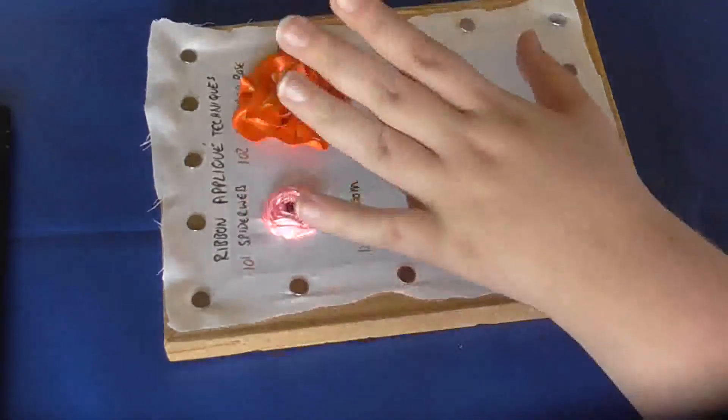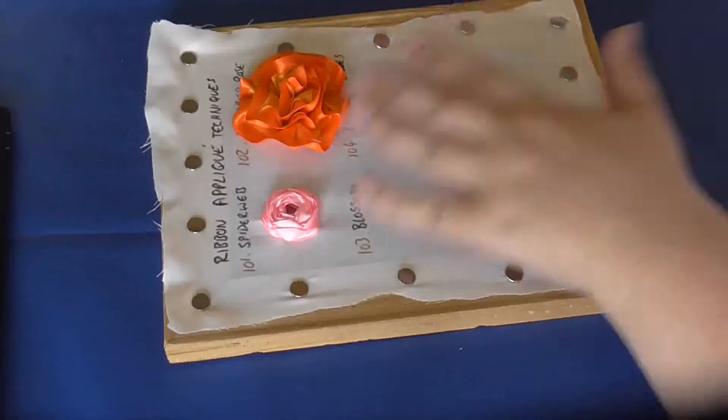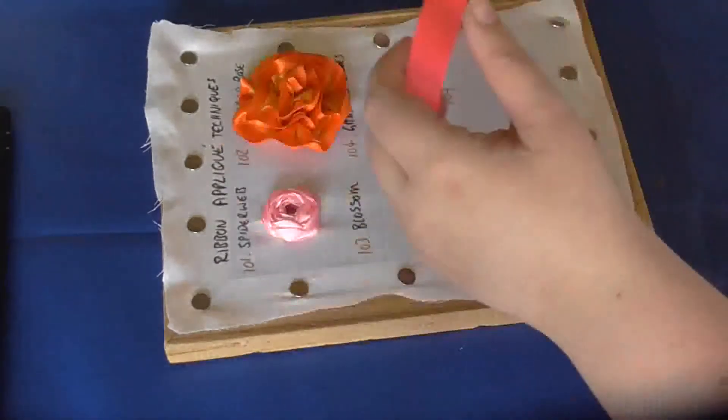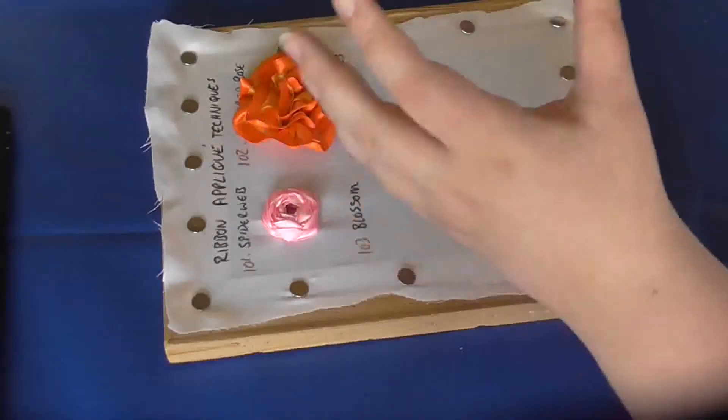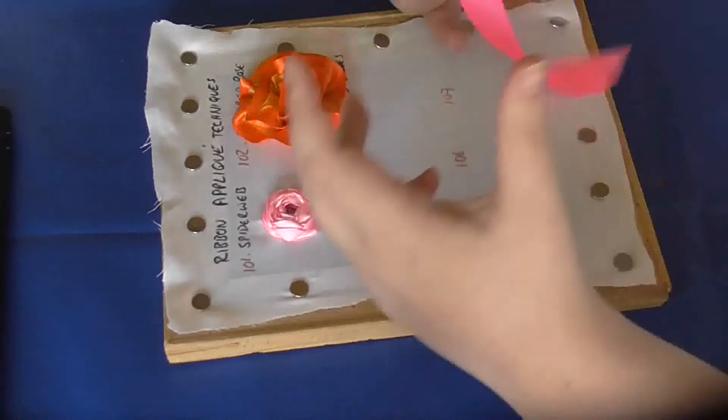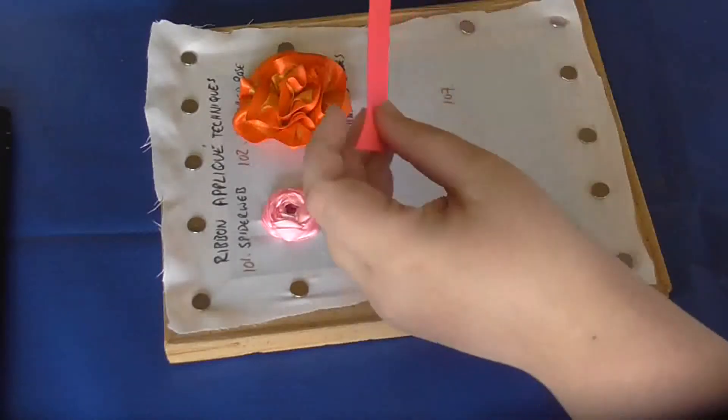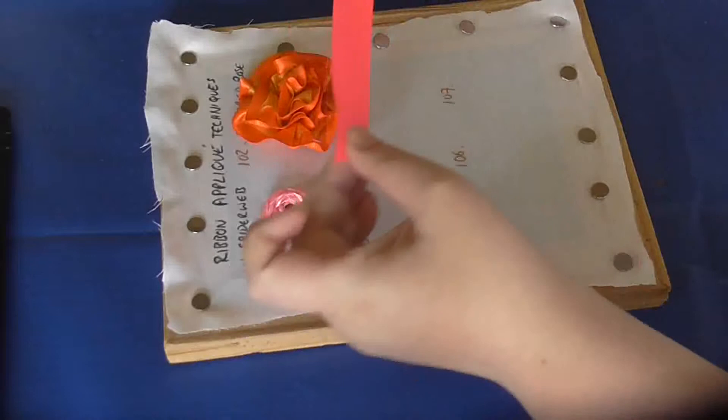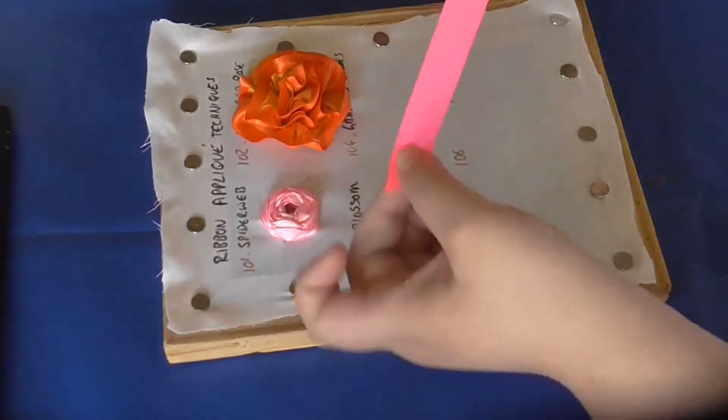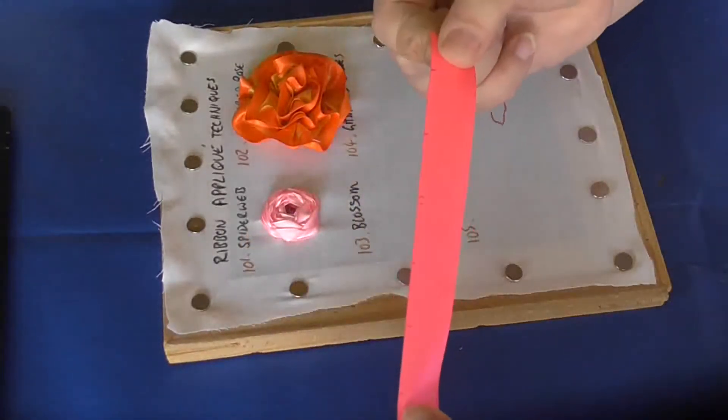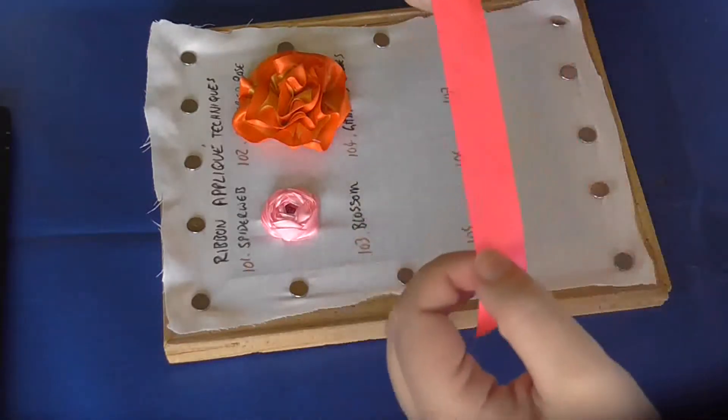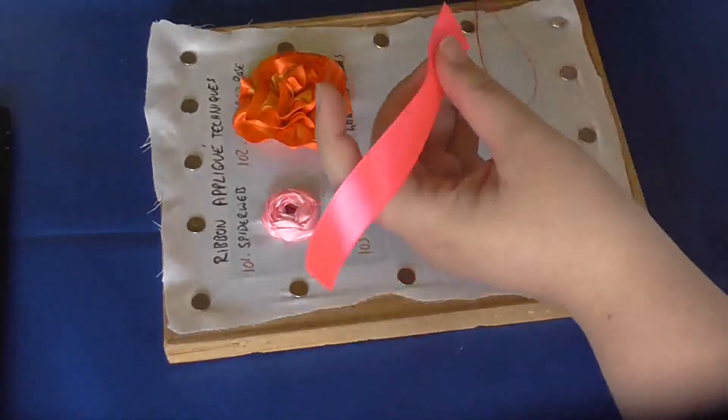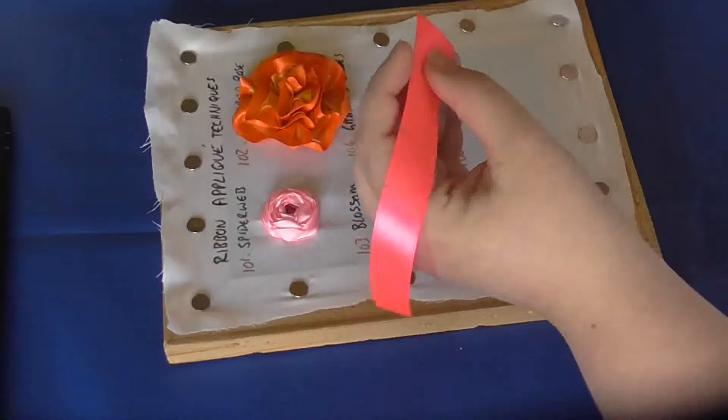This is the basic sewn applique technique for a ribbon blossom, which is a separate piece that you sew on. Start with a piece of ribbon and mark it every inch or so along one edge. I'm using pen because it's more visible for you, but you'd use a soluble marker or something like that instead.